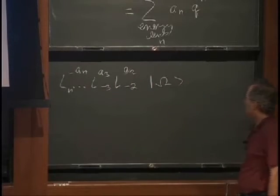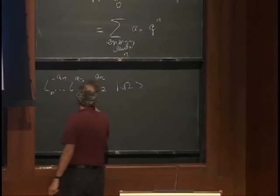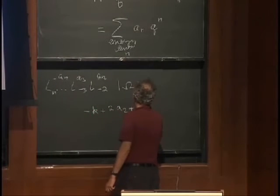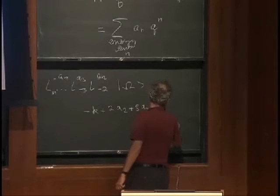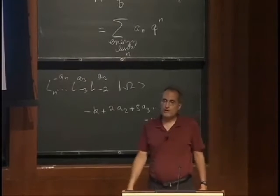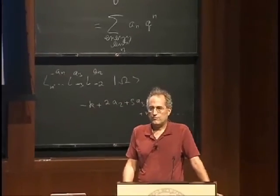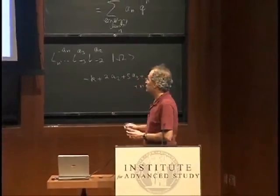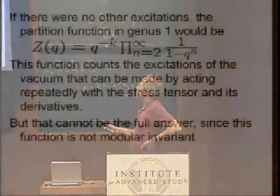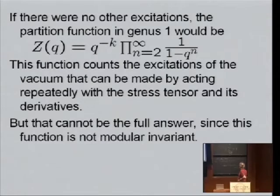We can make a product of Virasoro generators acting on the ground state. That'll give an energy level that'll be -K plus 2A_2 plus 3A_3 and so on. Of course, to make finite energy states, we should only create states by acting with finitely many L_N's for any given state. So what has been written here, I've simply written down a generating function that counts these states. So the 1 over (1-q²), well, this is like a free Bose gas. The ground state energy is -K, the activation energies are 2 times an occupation number A_2, 3 times an occupation number A_3, and so on. It's a one-dimensional Bose gas, except the lowest momentum is 2. The allowed energies are 2, 3, 4, and so on. And this is simply the partition function of the free Bose gas.